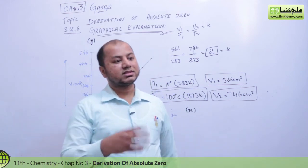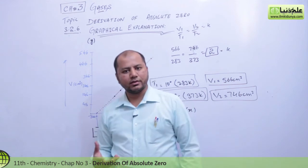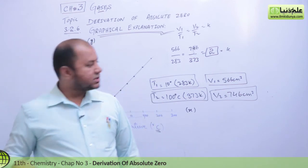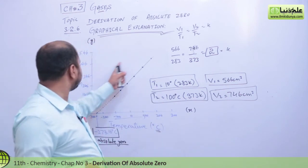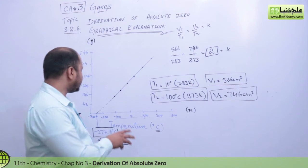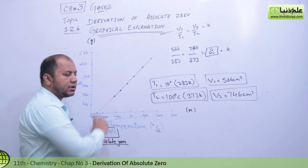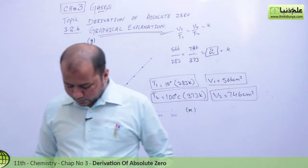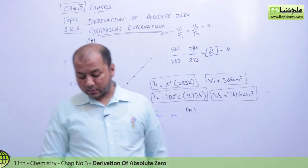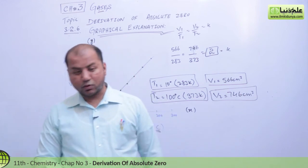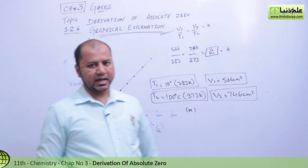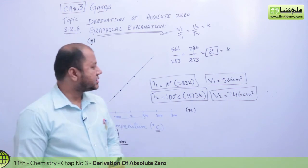There is a constant increase and decrease in volume with respect to temperature, which is what Charles was trying to explain. The greater the mass of a gas, the greater the volume, and if you decrease the temperature the volume automatically decreases. That is how we recognize that minus 273 degrees Celsius is the coldest attainable temperature for a gas.